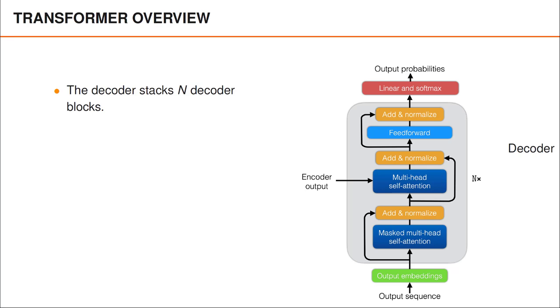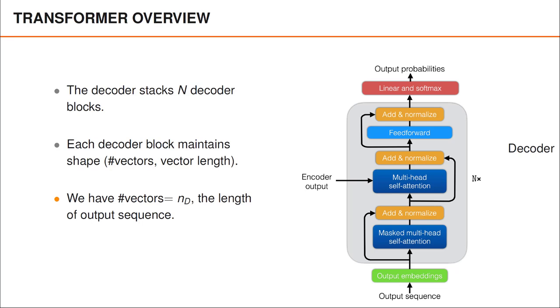But different parameters. Similarly to the encoder, the decoder maintains the shape of the input. However, it's important to note that the matrices that are passed between the layers in the decoder all have the same shape as the embedded version of the output sequence. That is, the number of vectors is always the same as the number of elements in the output sequence.